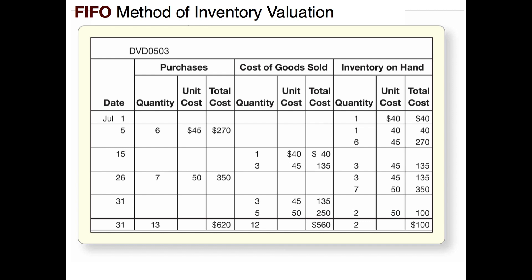Notice that in those last three columns I'm keeping the different values of inventory separate — the one item at $40 is separate from the six items at $45. That's going to be important when we start selling items, like we do on July the 15th.